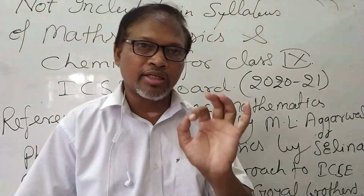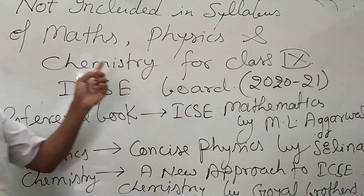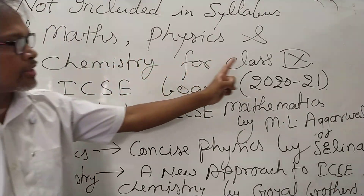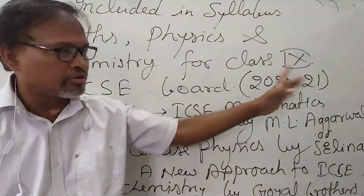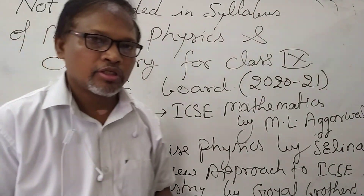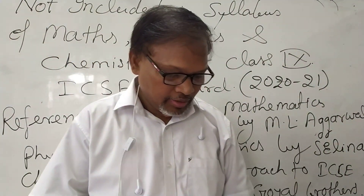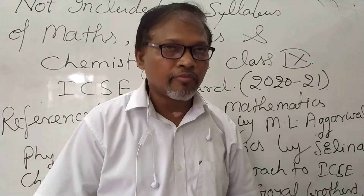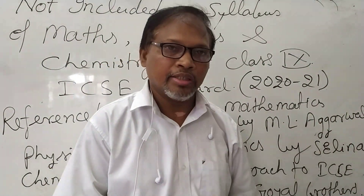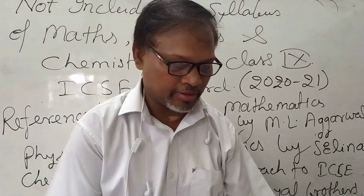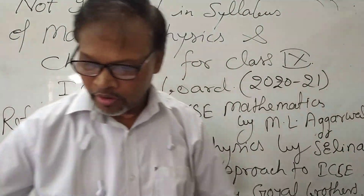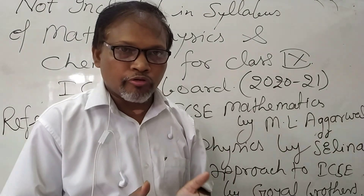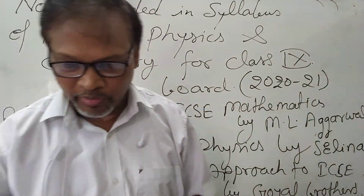I am talking only about class 9. You can see this is also written: not included in the syllabus of maths, physics, and chemistry for class 9 for the year 2020-21 for ICSC Board — not for CBSE Board. Then in chapter 10, introduction of electromagnets and its uses will not come — exercise 10B has been removed. If you note these down, it will be better for you.